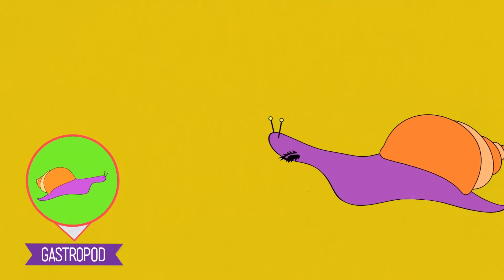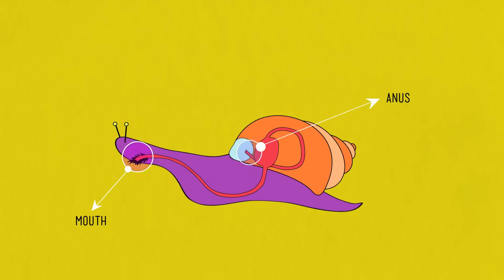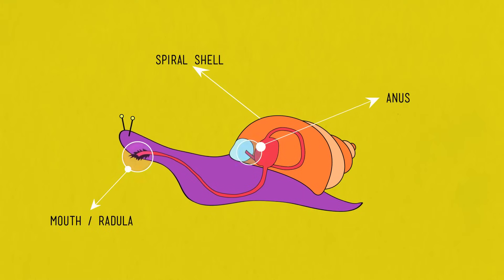Chitons are headless marine animals covered with a plated shell, using their foot to move on rocks and scraping off algae with their radula. Bivalves have shells divided into two hinged halves, like clams and scallops — they're filter feeders, trapping food particles in mucus on their gills. Snails and slugs are the gastropods. One thing that sets them apart is torsion, in which the visceral mass twists to the side during embryonic development so that the anus ends up basically right above the head. Most gastropods also have a single spiraled shell and use their radula to graze on algae and plants.